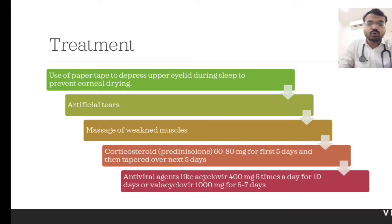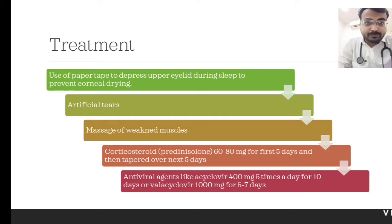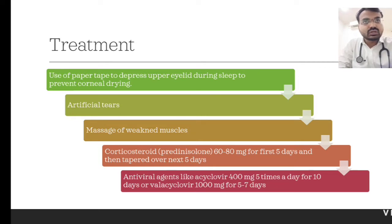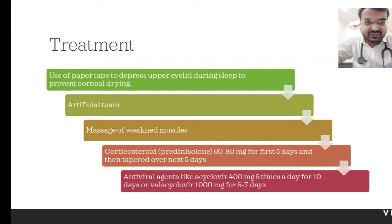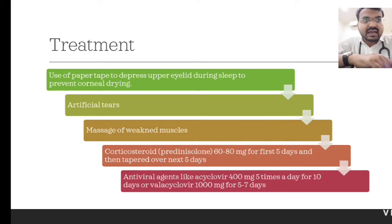Now, how to manage a case of Bell's palsy. First of all, we have to prevent complications due to corneal drying, because the patient is not able to close the eye properly. So we have to give the patient a paper tape to depress the eyelid during sleep to prevent corneal drying. We can also give artificial tear drops like carboxymethylcellulose or any other artificial tear drops for lubrication and to prevent drying of the cornea.